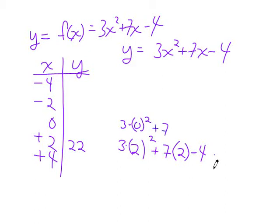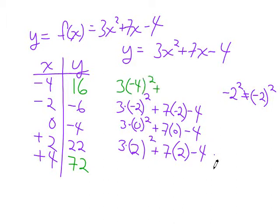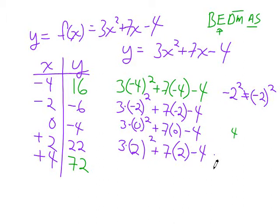I'm really good at multiplying by zero — when the x is zero, it's easy: just the constant at the end, minus 4. Three times negative-2-squared: that'd be 12 minus 14, which is negative 2, minus 6. Three times negative-4-squared: that's 48 minus 28 minus 4, which is 16. That's why we're throwing the negative numbers inside brackets. You can pause this in YouTube. Whenever you plug in a number, put it in brackets.